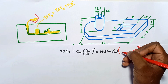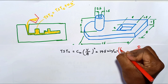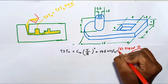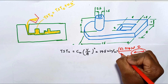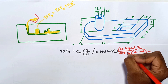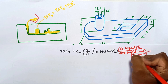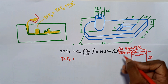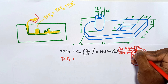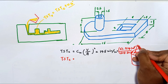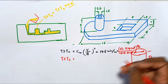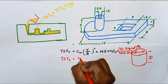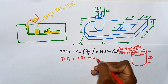Substituting the values: total volume is equal to 61.974 cubic inches, divided by total surface area 203.36 square inches. So we can calculate the total solidification time of the casting as 1.81 minutes.